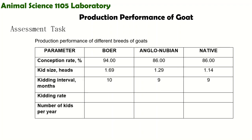So for your lab activity number 9, for your assessment task, you will be computing for the production performance of different breeds of goat. We have three breeds of goat being compared: Boer, Anglo-Nubian, and Native Goat.